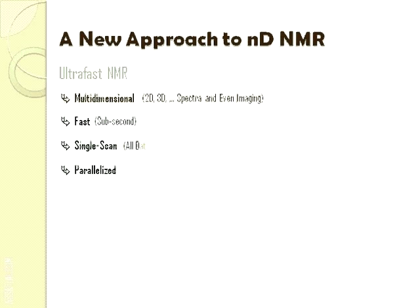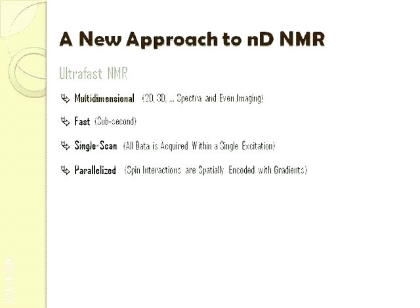That is, all data is acquired after exciting our sample only once. It does so by encoding the spin interactions using spatial gradients, and then uses gradients again during the acquisition to retrieve the encoded information.